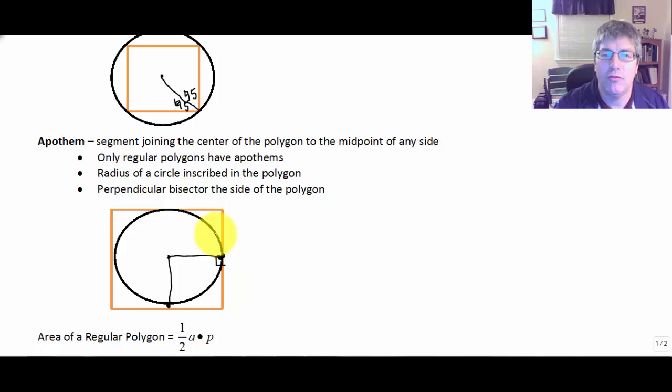You may also see the two-tangent theorem here. But the radius of a circle, it's the radius of a circle inscribed in the polygon. So it's a radius of my circle here. And it is the perpendicular bisector of the side of the polygon. So we can see that it's perpendicular, but it will also bisect the side. So if my square had a side of length 10, it would split that 5 and 5.